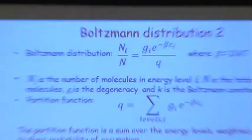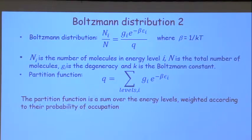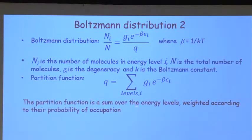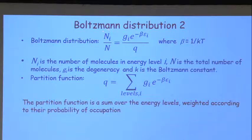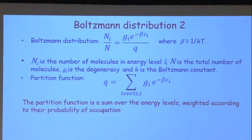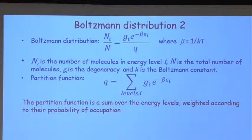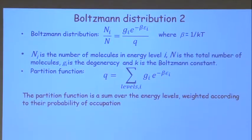The partition function Q is defined as the sum over all levels of g_i times e to the minus beta E_i. It's simply the sum of the Boltzmann factor over all energy levels — a sum over all energy levels weighted according to the probability of their occupation.